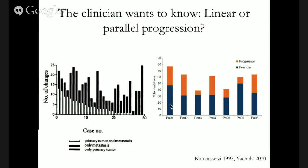The same observation is shown here with newer technologies — exome sequencing of pancreatic cancers. You can still appreciate the same pattern: in some patients the primary and metastasis tend to be very similar, and in others they tend to be very different.